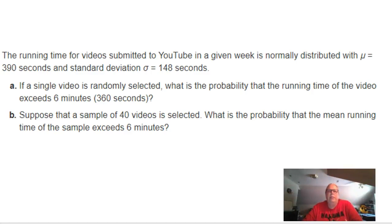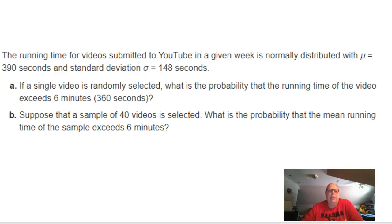This example goes with chapter 6, the normal distribution, and we'll talk about how to graph these problems and then how to solve them. This problem comes out of your textbook at the end of chapter 6. The running time for videos submitted to YouTube in a given week is normally distributed with mu equal to 390 seconds and a standard deviation of 148 seconds. Part A: if a single video is randomly selected, what is the probability that the running time of the video exceeds 6 minutes or 360 seconds?